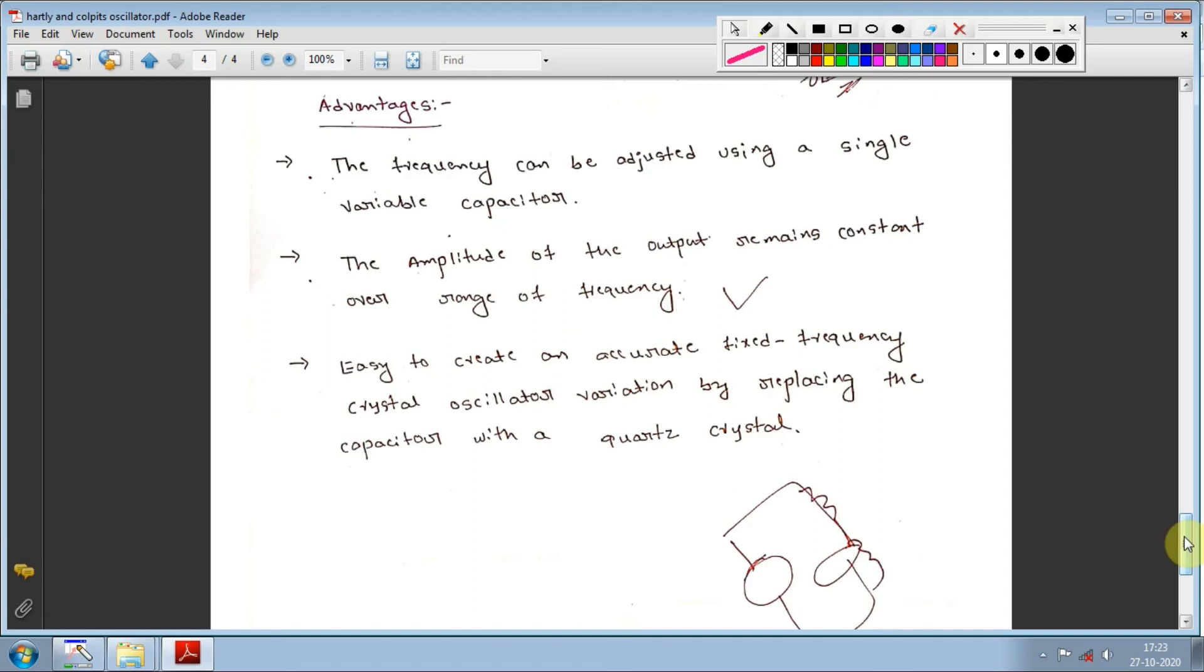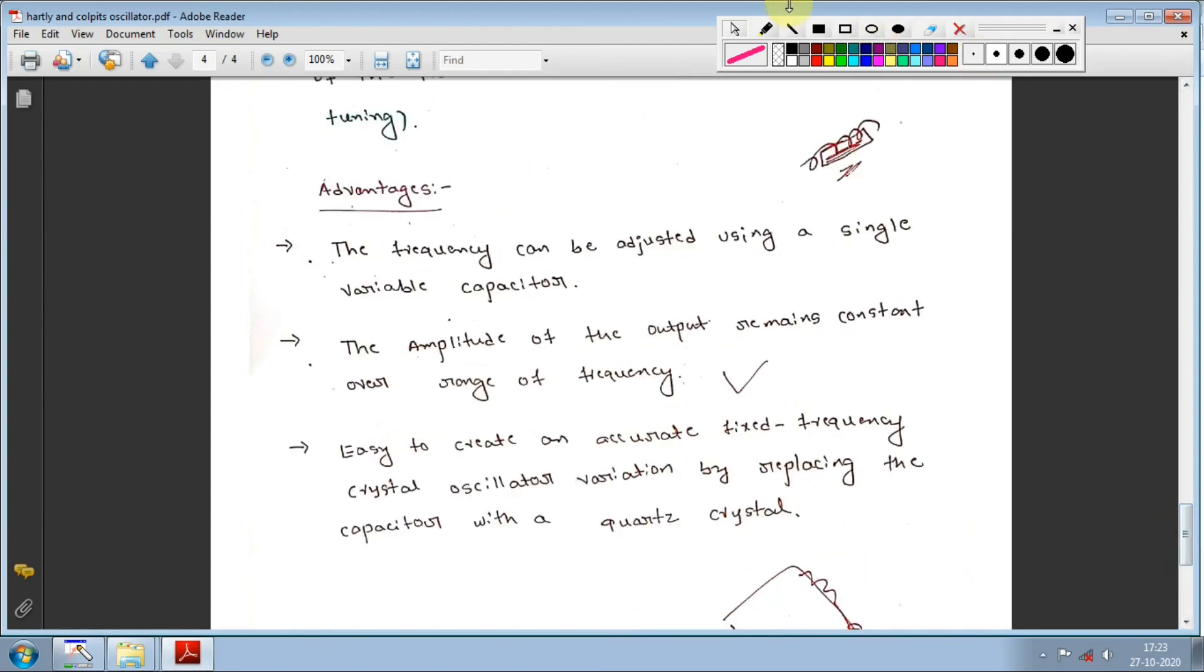Advantages of Hartley oscillator: The frequency can be adjusted using a single variable capacitor, as I just explained. Second, the amplitude of the output remains constant over a range of frequencies. Amplitude is the height of the trough and depth of the crest - the vertical distance. Frequency is the number of waves in one second. For example, three complete cycles in one second means three hertz.